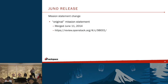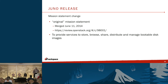We got the metadata definitions catalog — a new endpoint V2 metadefs was introduced — and a restricted policy for downloading images. Also with Juno is the mission statement change. The original mission statement was merged June 11, 2014 — it turned out the mission statement for Glance had never actually been filed anywhere. So when we wanted to change it, we first had to put in the statement describing what Glance was doing up to now: providing services to store, browse, share, distribute, and manage bootable disk images.